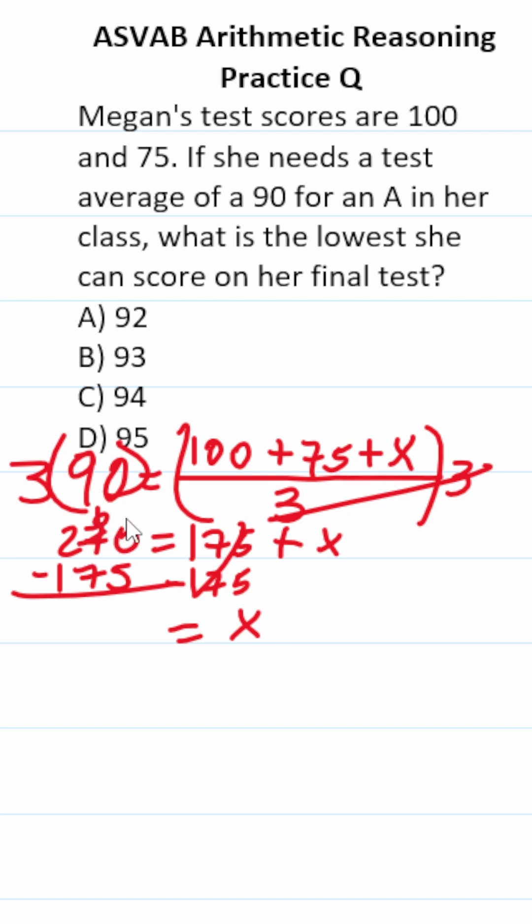0 minus 5, we can't do. We have to borrow. This becomes a 6. This becomes 10. 10 minus 5 is 5. 6 minus 7, we can't do. This becomes 1. This becomes 16. 16 minus 7 is 9. 1 minus 1 is nothing. So this is D, 95.